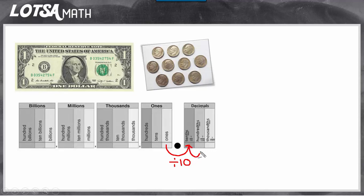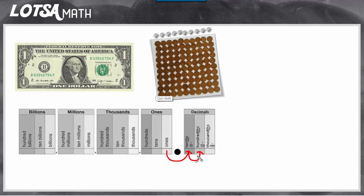We can go to the next place value as well, to the hundredth spot. In the hundredth spot, it's gotten ten times smaller than a dime because it was divided by ten again. So for every dime, we've broken it up into ten parts, because it takes ten pennies to make a dime — ten pennies to make this dime, and ten pennies to make this dime, and so forth, all the way through the ten dimes that it took to make a dollar. So if you go straight from the ones place to the hundredths place, you haven't divided it by ten, but you've divided it by ten times ten — so you've divided it by a hundred. And it takes a hundred pennies to make a dollar.